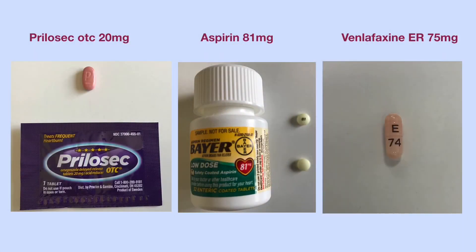How can you determine what medications are given to you? Each pill has a shape, a color, and an imprint which facilitate its identification. For example, 20mg Prilosec OTC has a capsule shape, pink color, and an imprint of the letter P. 81mg Bayer aspirin is a yellow round pill with an imprint of 81. In contrast, 75mg Venlafaxine extended release has a capsule shape, a peach color, and an imprint of E-74.